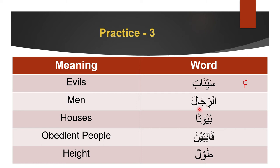Al-rijāl: it can be a broken plural or singular. The meaning is 'men,' which is plural, so it is a broken plural. Since men are human, this is a human broken plural — it can be masculine plural (what it really is) or feminine singular. Next: buyūt means 'houses,' a non-human broken plural, which means it is definitely feminine.